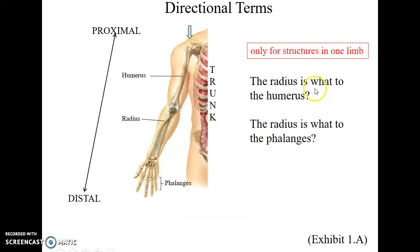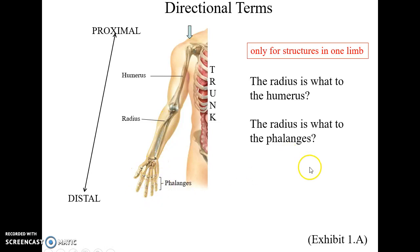For structures within one limb only, we use the terms proximal and distal instead of superior and inferior. Proximal means closer to where the limb attaches to the trunk; distal means further away from that attachment point. For example, the radius is distal compared to the humerus, while the radius is proximal compared to the phalanges.